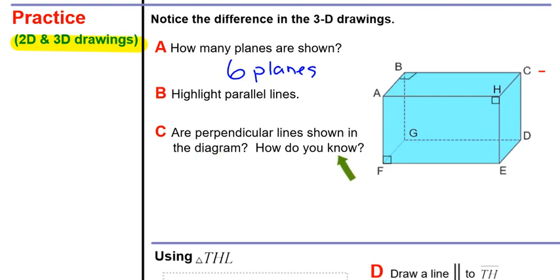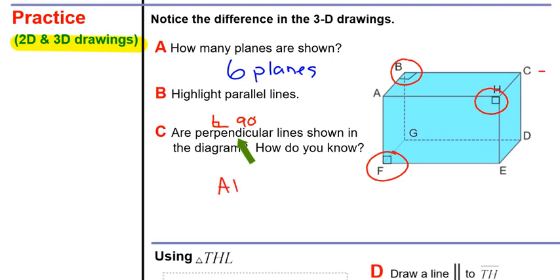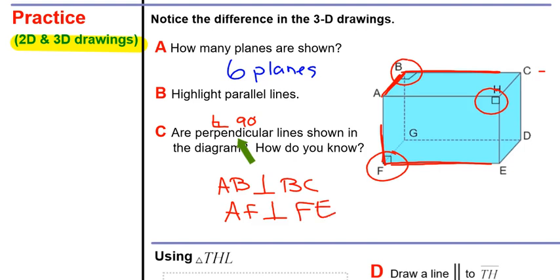When looking at this picture, the only way to know that lines are perpendicular is if they show a 90-degree label or the little box in the corner. Looking closely at the picture, I do notice perpendicular lines marked with those little boxes. For example, AB is perpendicular to BC, AF is perpendicular to FE, and AH is perpendicular to HE — all marked with that little square.